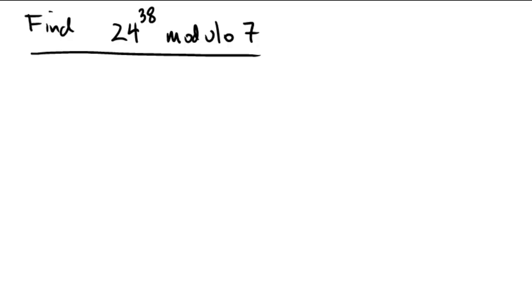First thing I'll note is that 24 actually is larger than 7. So I'm going to first say that 24 to the 38 is congruent to... Well, let's see, what's the remainder when 24 is divided by 7? 7 goes in 3 times for 21 with a remainder of 3. So this is the same as 3 to the 38 modulo 7. Remember, we're working modulo 7.